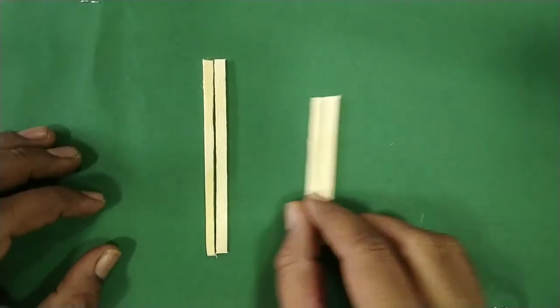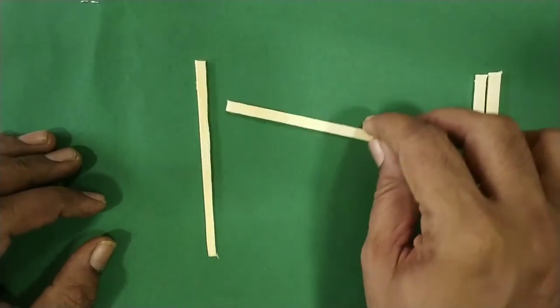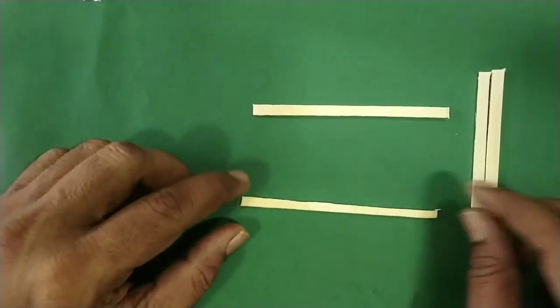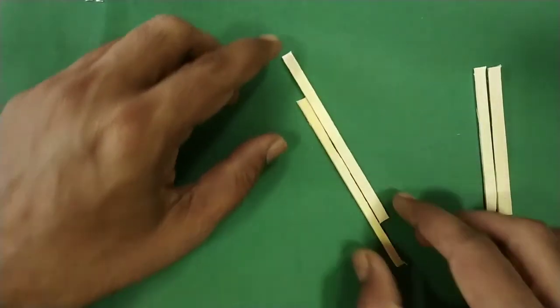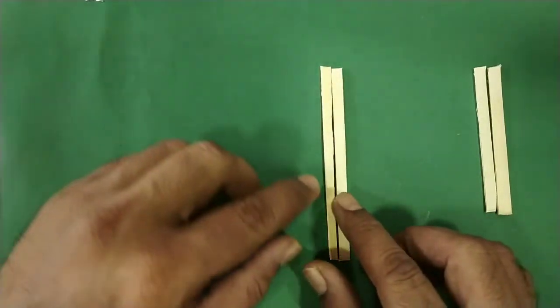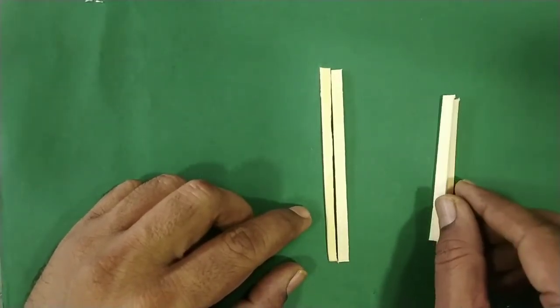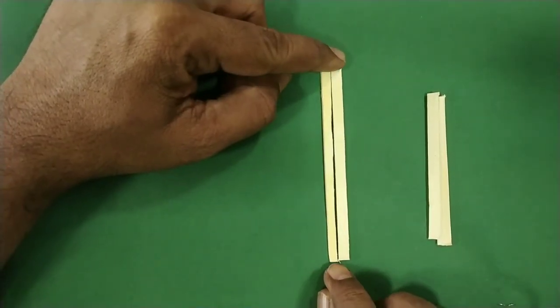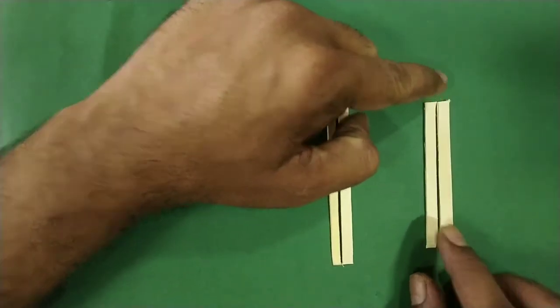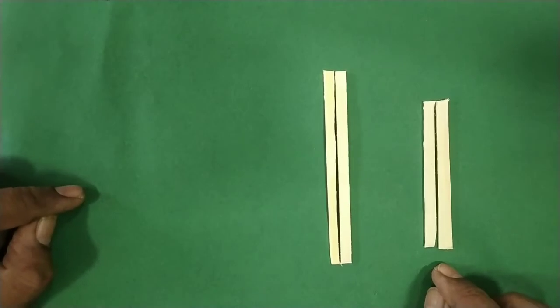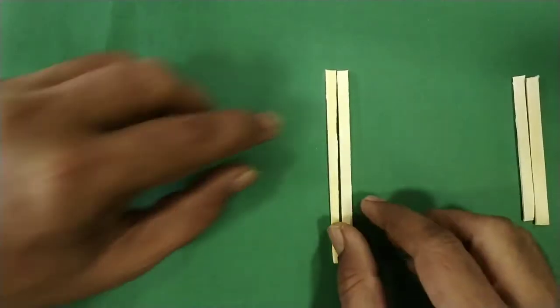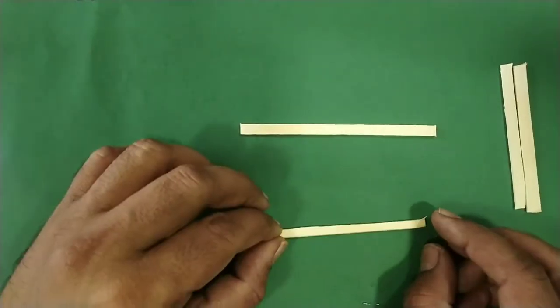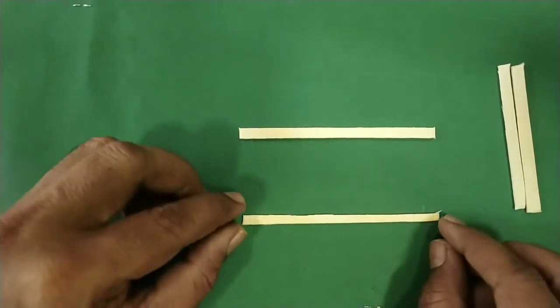We will learn to make the rectangle. Whatever bamboo sticks you have, the rectangle property is that opposite sides are congruent. Take two of the larger size with equal length and two of the smaller size. After that, you just make the shape of rectangle.